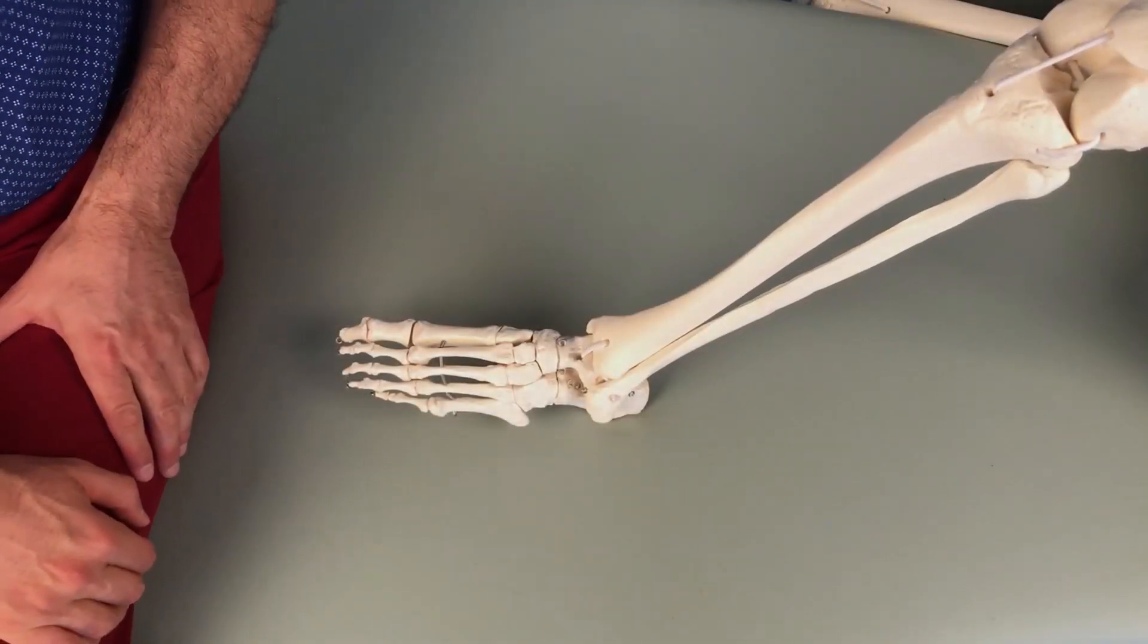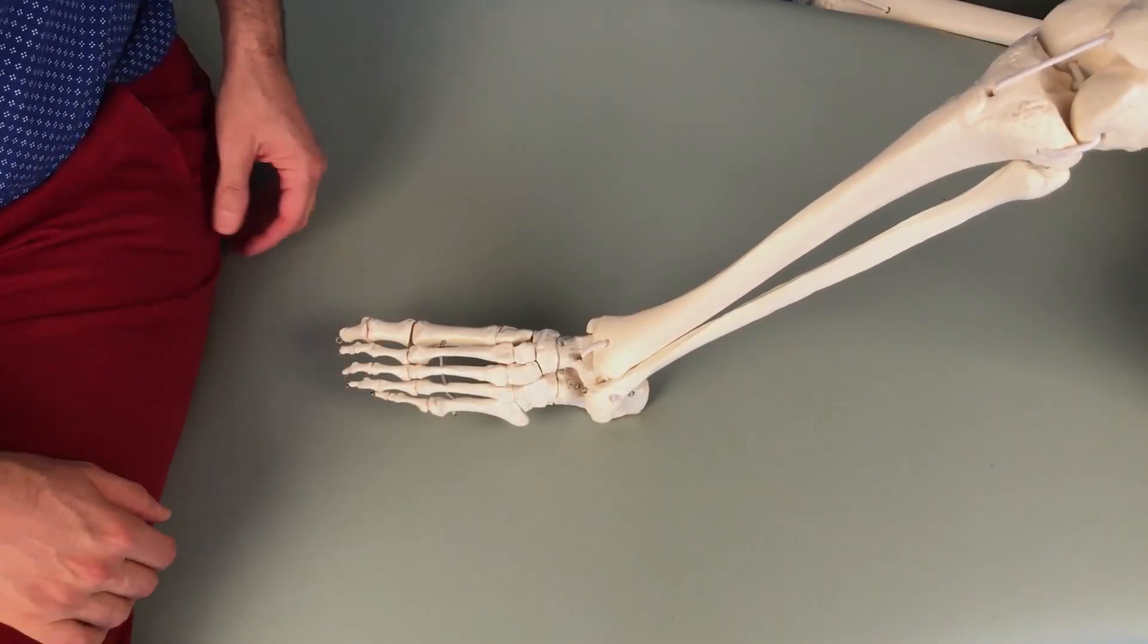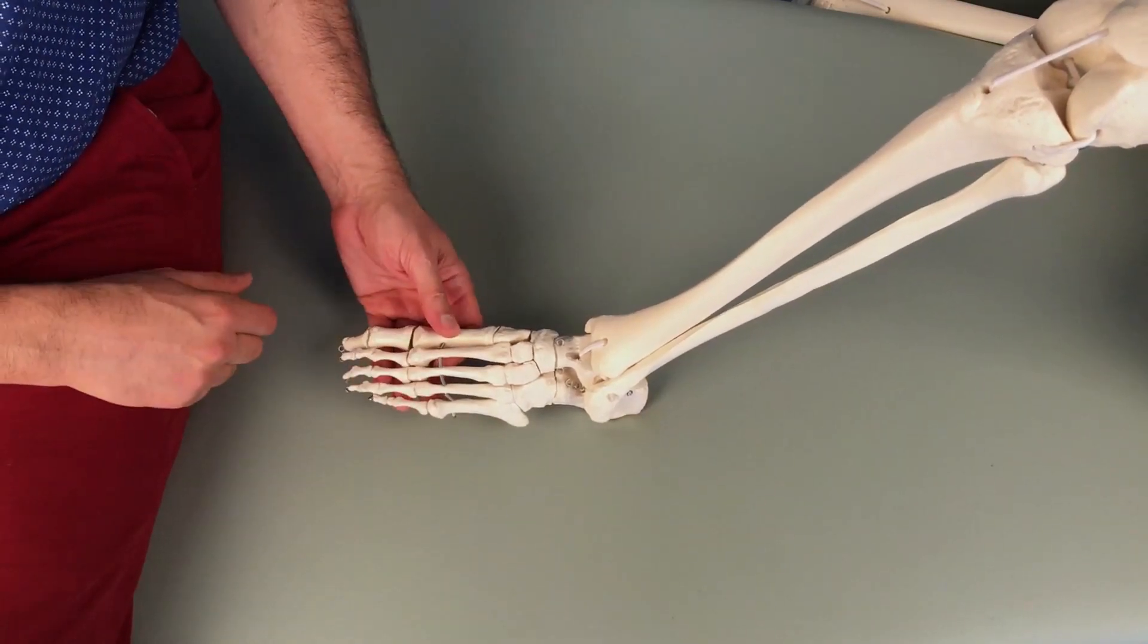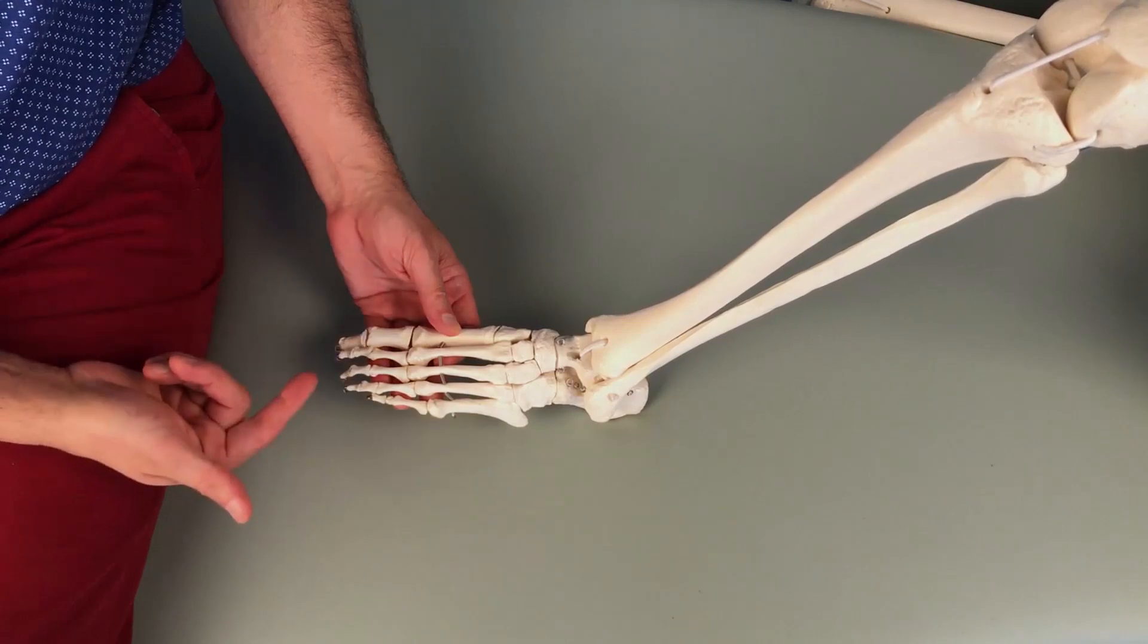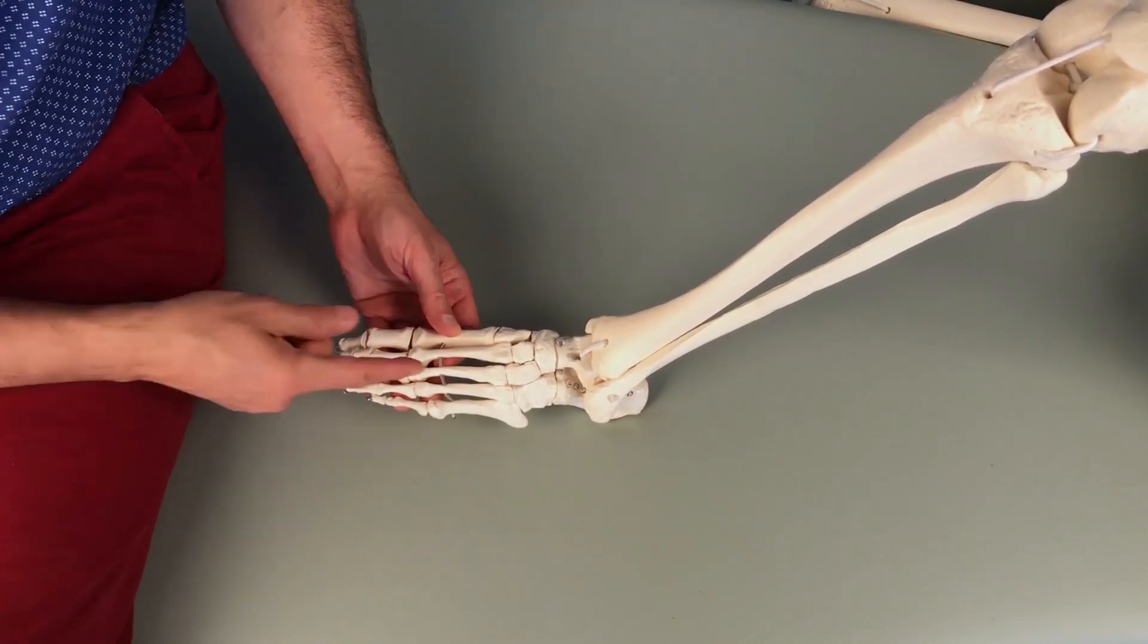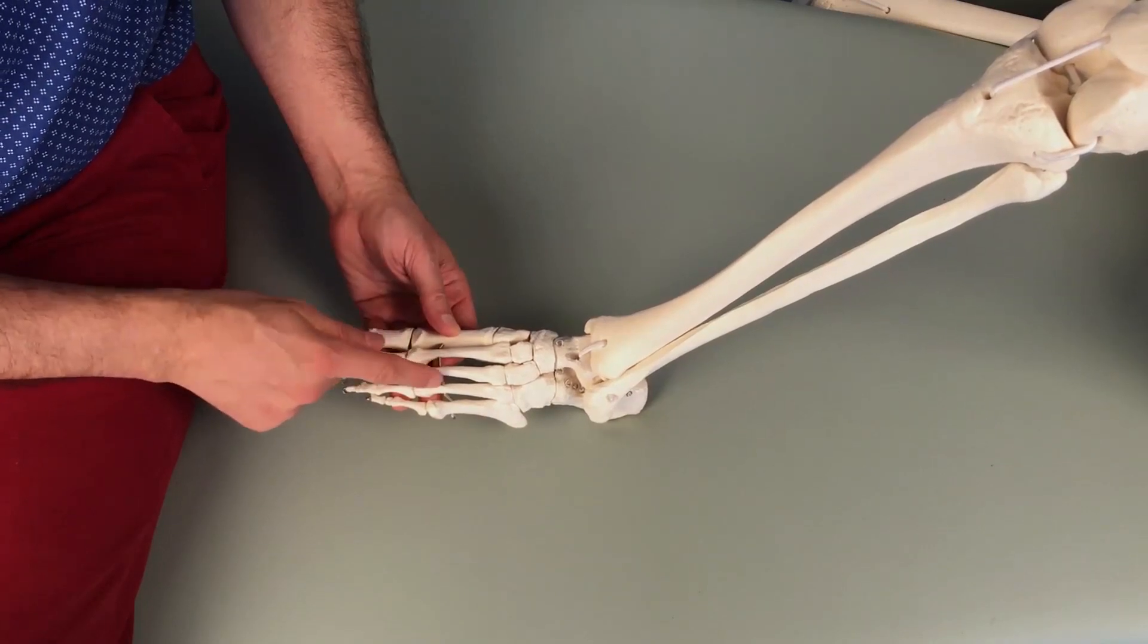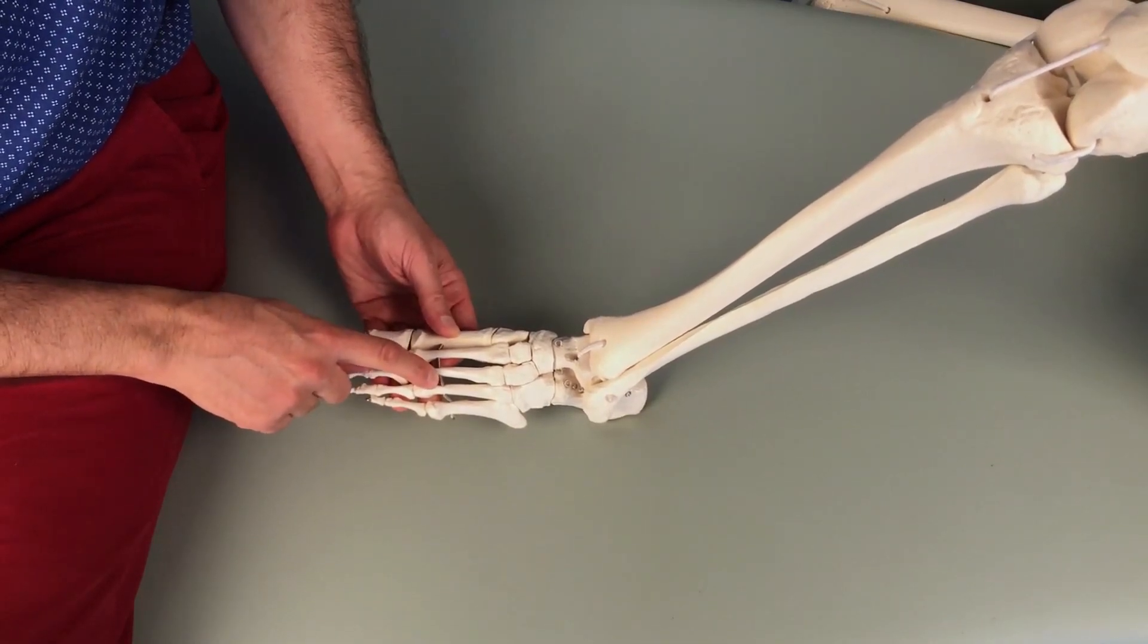Let's now demonstrate Morton's test for Morton's neuroma with a plastic skeleton. Assuming that the nerve that's the neuroma, the irritated inflamed nerve, is located between the third and the fourth metatarsals, right about here where this wire little metal spring is.